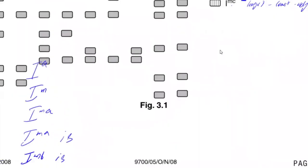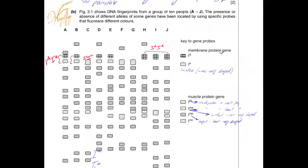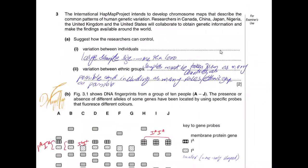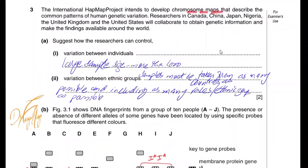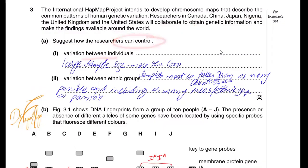This question is taken from October/November 2008, Paper 5. In this question, they have mentioned that an international HapMap project intends to develop chromosome maps and describe the common patterns of human genetic variation. Researchers in different countries will collaborate to obtain genetic information. To control variation between individuals, a very large sample size of more than a thousand in each country must be used.